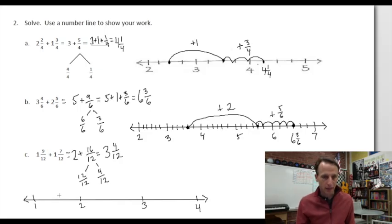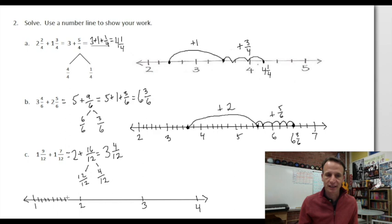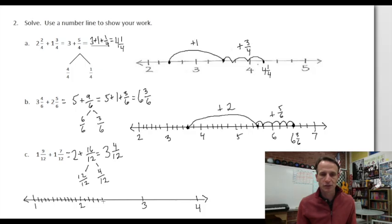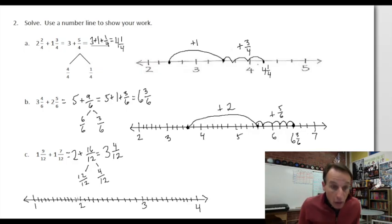We have to draw eleven lines in between every whole number — one, two, three, four, five, six, seven, eight, nine, ten, eleven — three times over. That's probably the reason I griped about having to do these. So one and nine-twelfths: counting back from twelve, that's twelve, eleven, ten, nine — there it is. There's one and nine-twelfths.